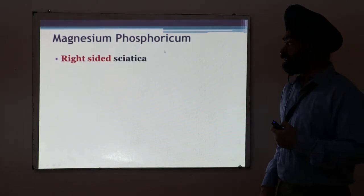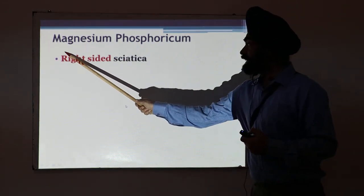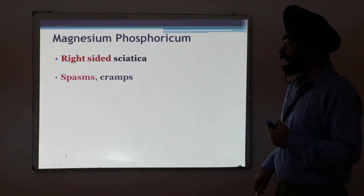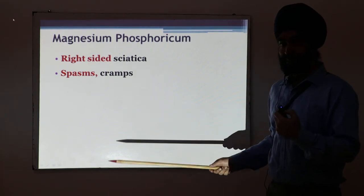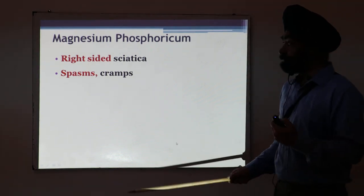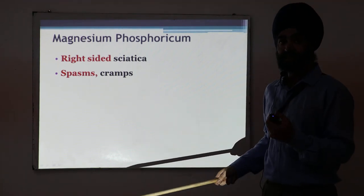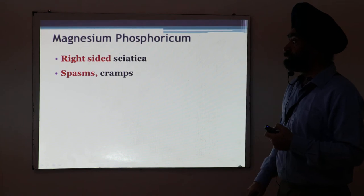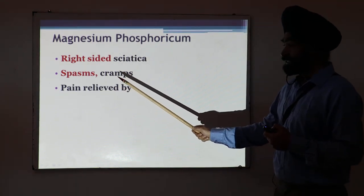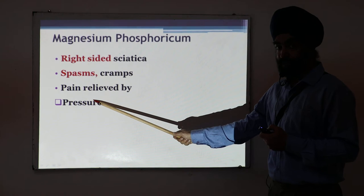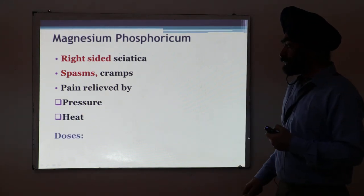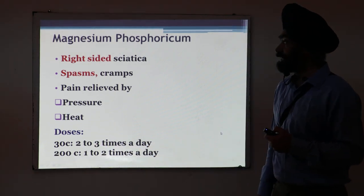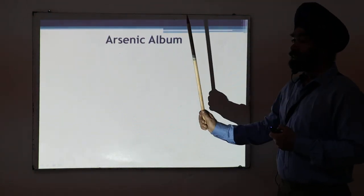The fourth medicine is Magnesium Phosphoricum, commonly called Mag Phos. It is indicated when sciatica is located on the right side of the body. Along with pain, there is spasm, contraction, and cramping — this is a strong feature of Magnesium Phosphoricum. Again, pain is relieved by hard pressure and by heat. Dose: 30C or 200C.